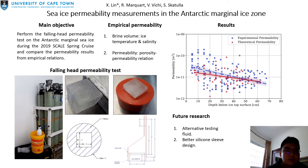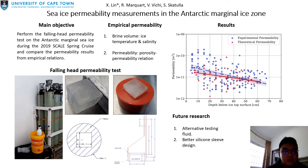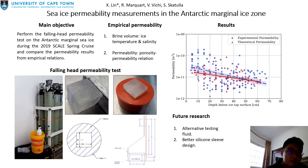The ice core is cut and placed into the silicone sleeve. The sleeve is fitted tightly into the pipe reducer where it connects to the pipe. It is filled with kerosene, and the initial and final height of kerosene in the pipe are recorded before and after the experiment.